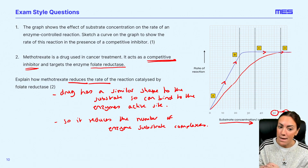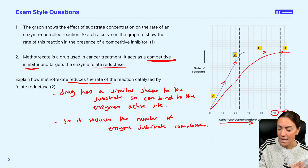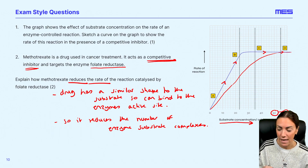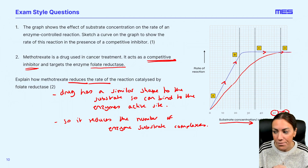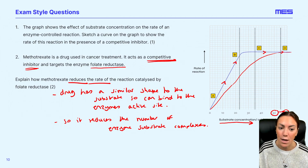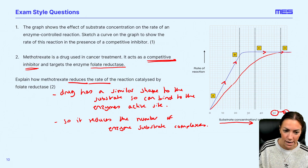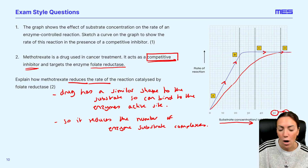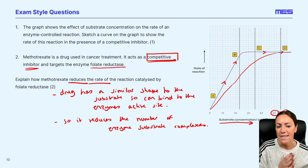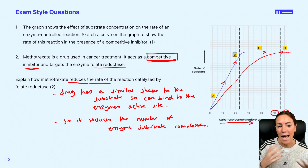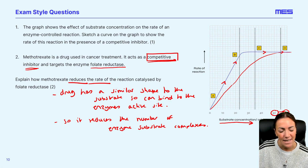That's how it reduces the rate of reaction. Remember not to mix up competitive and non-competitive: a non-competitive inhibitor would not have a similar shape to the substrate, would not be complementary to or bind to the active site, but would bind to an allosteric site, changing the shape of the active site — still reducing enzyme substrate complexes and the rate of reaction. But read the question carefully — this one was competitive. I hope that has helped you understand enzyme inhibitors and how to distinguish between them experimentally by increasing substrate concentration. Thanks, guys.